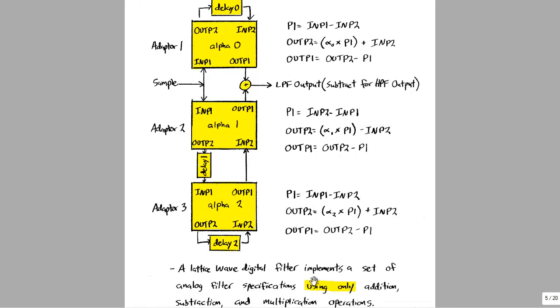We're able to implement analog filters—high pass, low pass, band pass, or band stop—using only addition, subtraction, and multiplication operations. This is a very efficient way to do digital filtering.